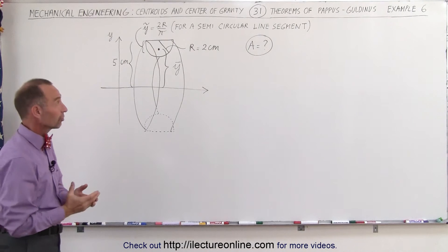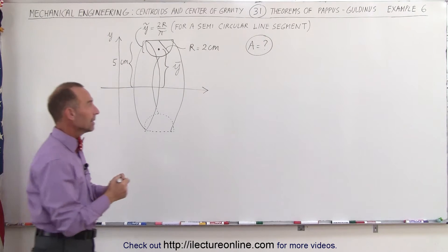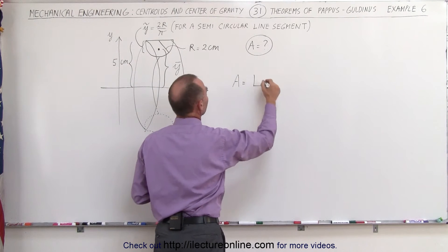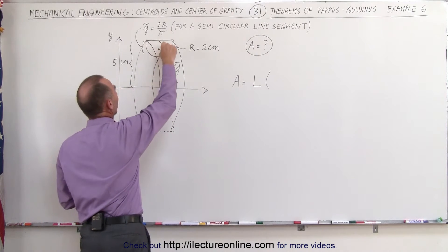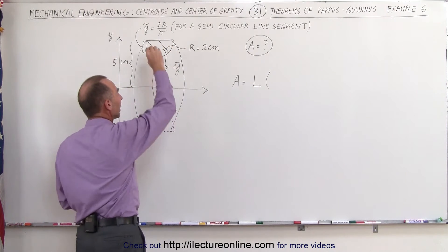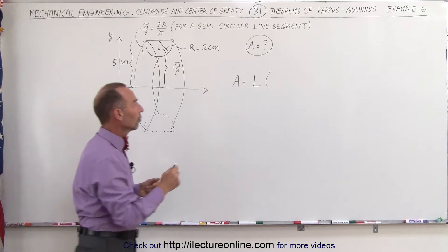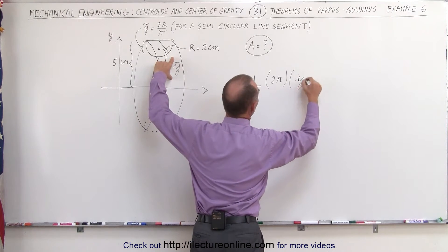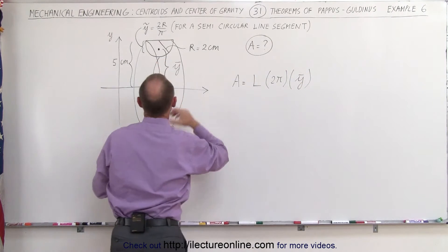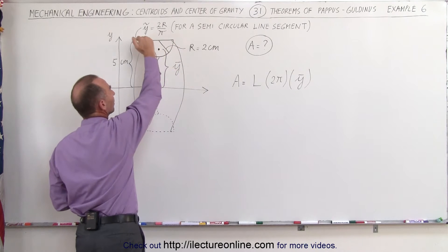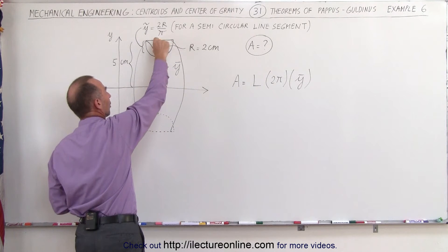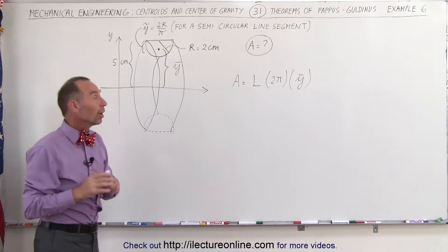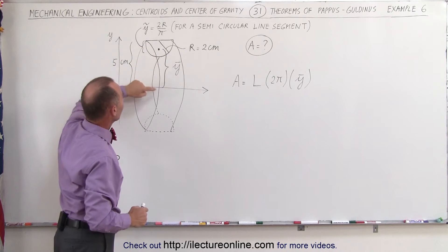We want to know the surface area of that structure. The concept is simple: the surface area is equal to the length of the arc times the distance that the center of mass of that arc travels as you go around the axis. That travel path is a circle; the distance of a circle is 2π times the radius, and the radius would be the center of mass of the wire. The center of mass of the wire relative to the center of the circle — this is a semicircle — equals 2r divided by π, but we don't want it relative to that distance; we want it relative to the x-axis.